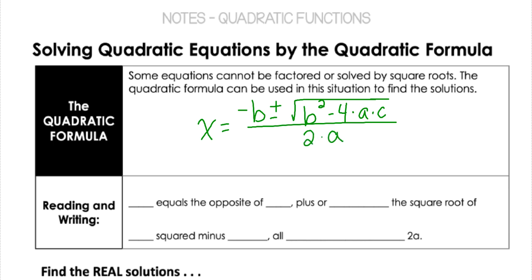The quadratic formula allows us to solve any quadratic when it's not factorable and can't be solved by the square root method. We say x equals the opposite of b — so if b is negative, we make it positive; positive becomes negative — plus or minus the square root of b squared minus 4ac, all divided by 2a.